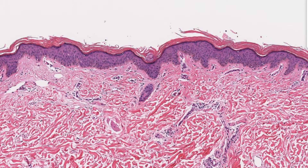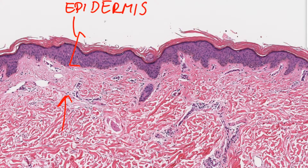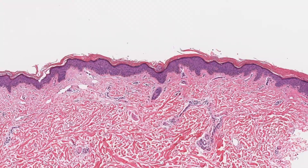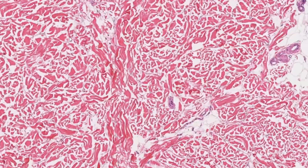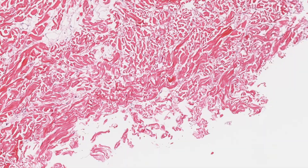From the very top, this is the epidermis — all this pink stuff. All the way down, this is the dermis. The layer that we saw at the bottom is not present in this section, so let us go back and see it in the other section.